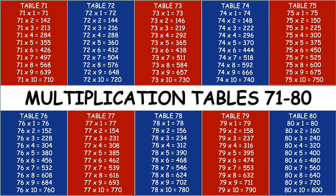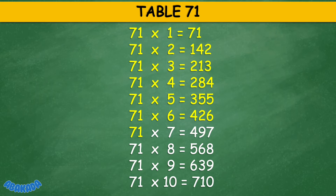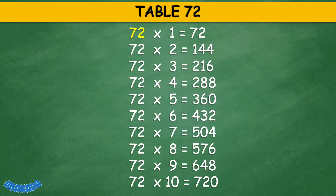Abacada Multiplication Table 71 to 80. Table 71: 71 times 1 equals 71, 71 times 2 equals 142, 71 times 3 equals 213, 71 times 4 equals 284, 71 times 5 equals 355, 71 times 6 equals 426, 71 times 7 equals 497, 71 times 8 equals 568, 71 times 9 equals 639, 71 times 10 equals 710.